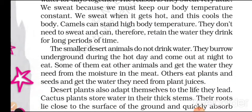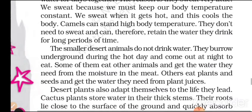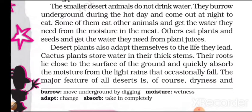The smaller desert animals do not drink water. They burrow underground during the hot day and come out at night to eat. Some of them eat other animals and get the water they need from the moisture in the meat. Others just eat plants and seeds and get the water they need from plant juices. Desert plants also adapt themselves to the life they lead. Cactus plants store water in their thick stems; their roots lie close to the surface of the ground and quickly absorb moisture from the light rains that occasionally fall.